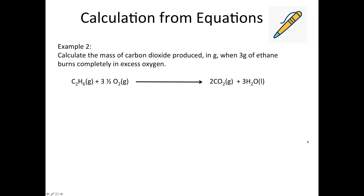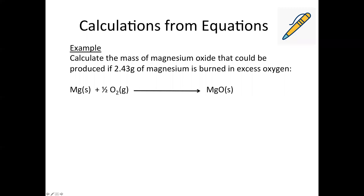There are a couple of ways you can do these calculations. I'm going to show you both ways for this first example and you can decide which you prefer. First, identify the two chemicals you need to take into account. You're asked to calculate the mass of magnesium oxide, so find it in the balanced equation and put a question mark above it. You're told you have 2.43 grams of magnesium, so write that on top of the magnesium. The oxygen is in excess, so we don't need to worry about it.